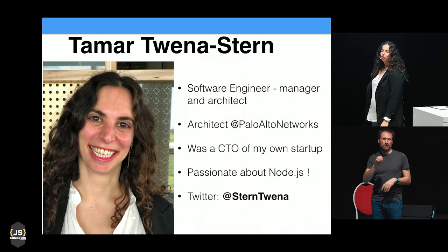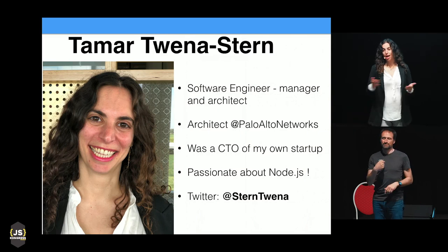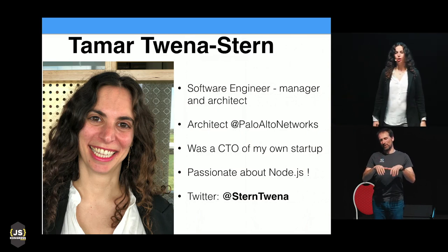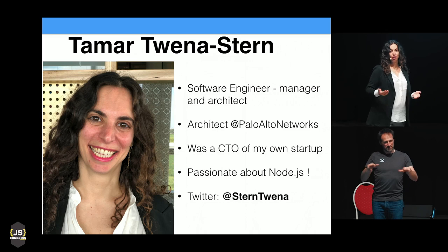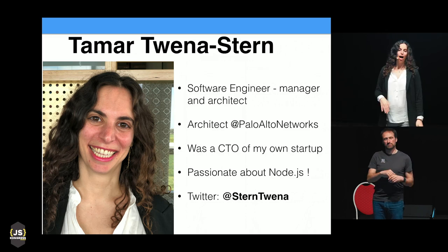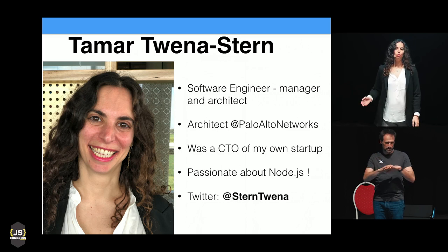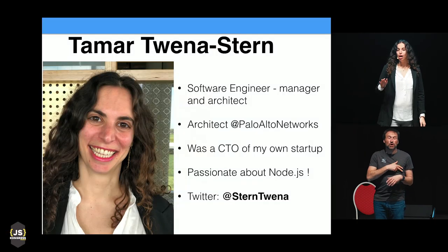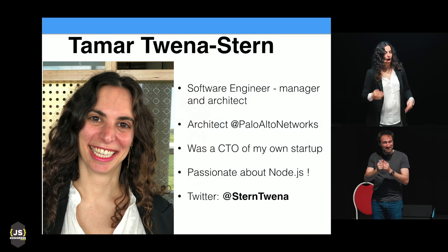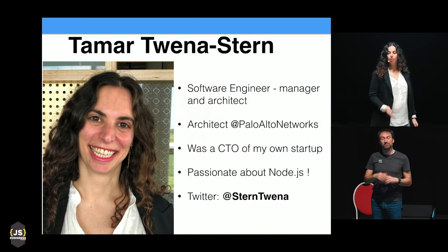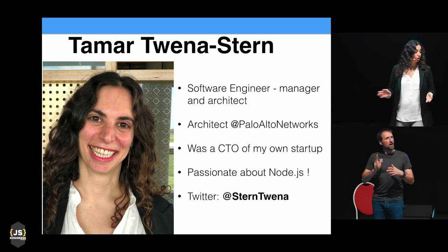I'd like to introduce myself. I'm enthusiastic about writing code — it's the best thing in the world. I manage large development teams and I'm also a software architect. I'm going to start working at Palo Alto Networks as an architect of a development group working in Node.js. I founded my own startup — a social network for food lovers — and that's when I got really deep into Node.js, since my entire backend was written in Node.js. That's when I got a real passion for that technology. You can find me on Twitter.